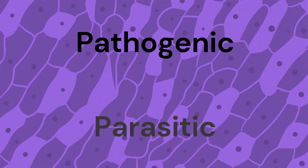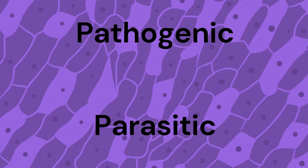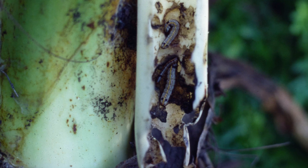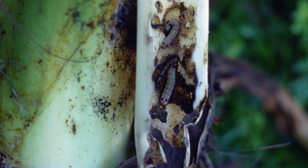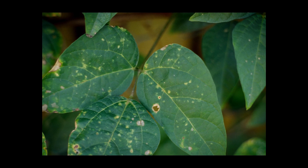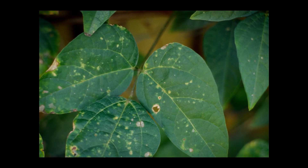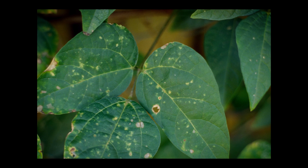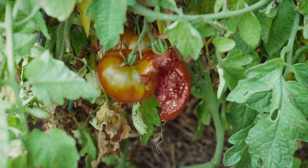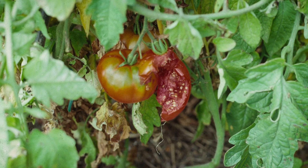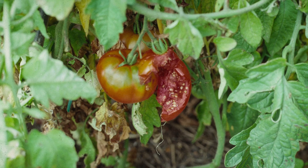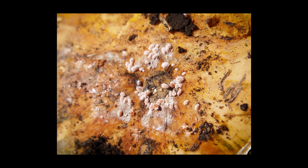They may also be referred to as infectious diseases because the diseases are often the result of infections which can spread to other plants. Parasitic organisms can attack a wide variety of different plants, but most only attack a small range of plants, and some are species specific, being unable to grow on other species.